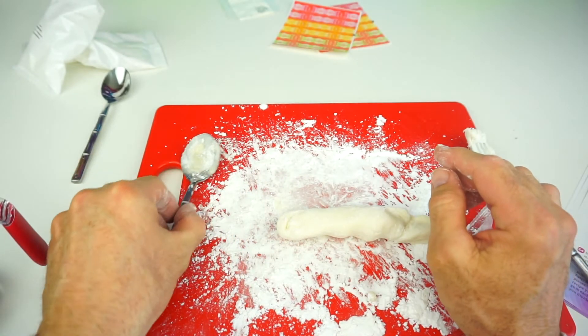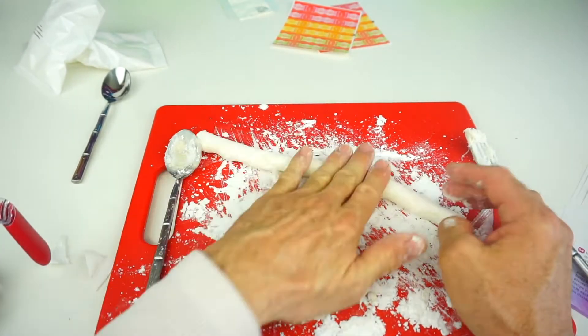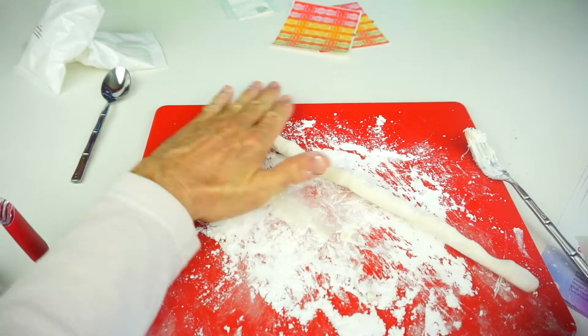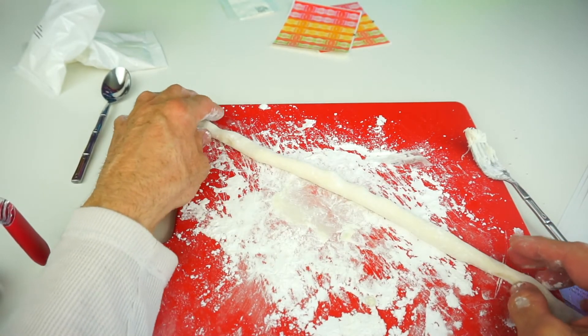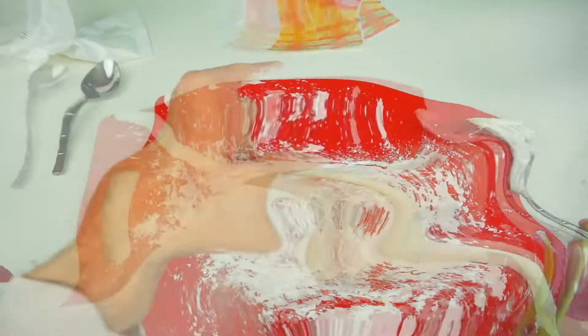Okay, next thing you want to do is roll it out. Okay, so I have a nice long piece of bubble gum here. Now I'm going to cut it into little pieces and wrap it up.